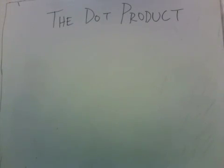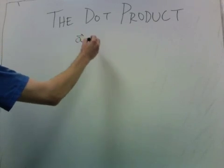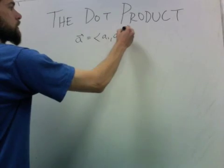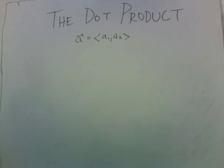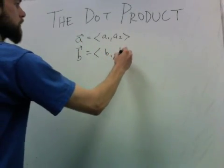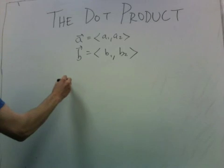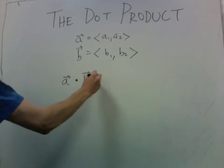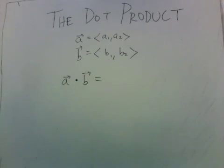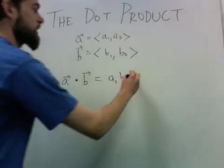This section is about the dot product. If we have two-dimensional vectors, say a and b, then the dot product is written this way: a dot b equals the first component times the first component plus the second component times the second component.